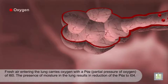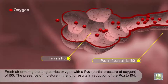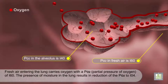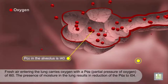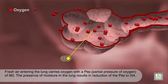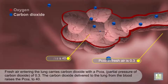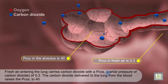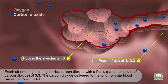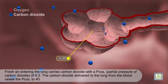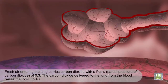Fresh air entering the lung carries a PO2 of 160. The presence of moisture in the lung results in a reduction of the PO2 to 104. Fresh air entering the lung carries carbon dioxide with a PCO2 — partial pressure of carbon dioxide — of 0.3. The carbon dioxide delivered to the lung from the blood raises the PCO2 to 40.